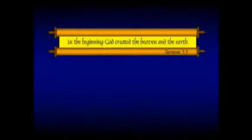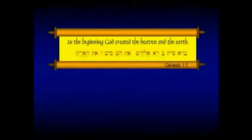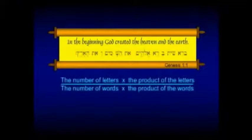If you take Genesis 1:1, and you take it in the Hebrew, and you take the number of letters and the product of letters divided by the number of words times the product of the words, if you do that, it turns out you get pi to four decimal places.